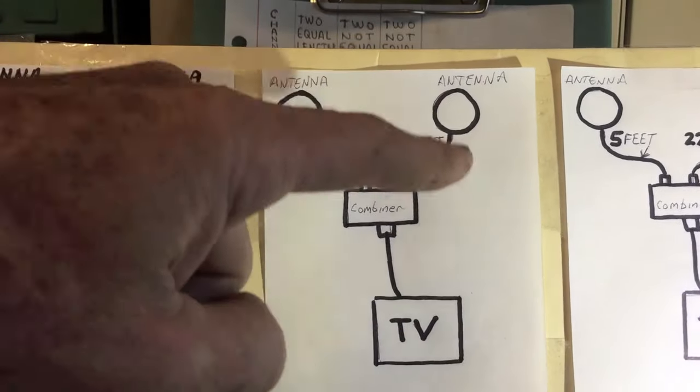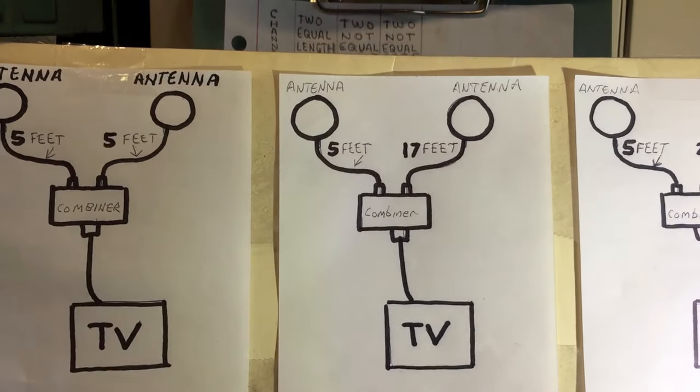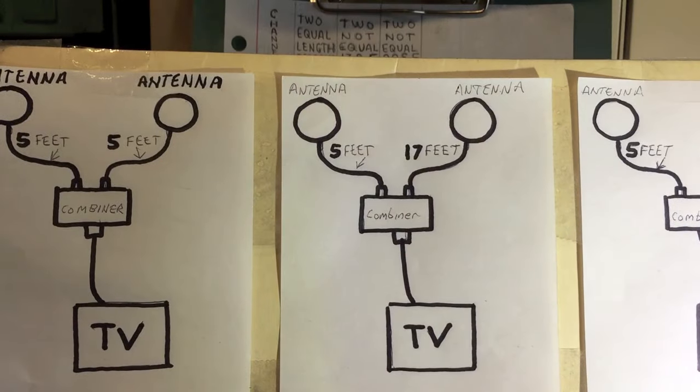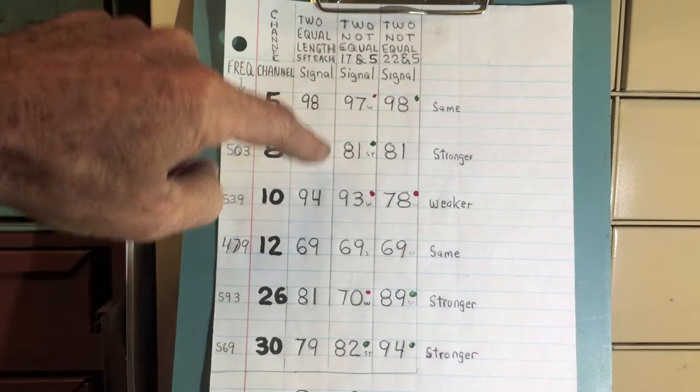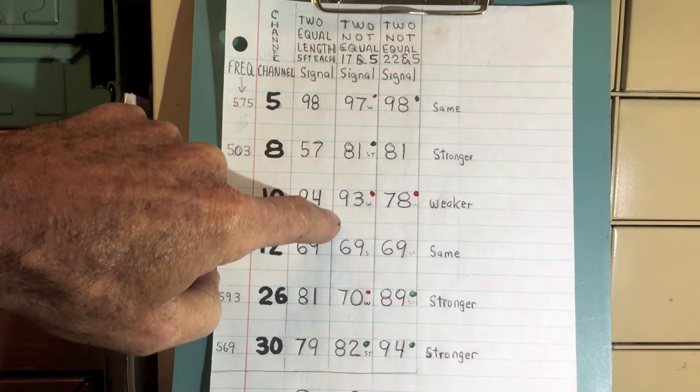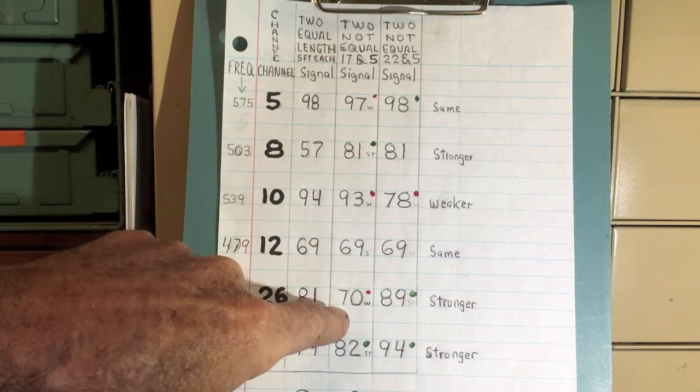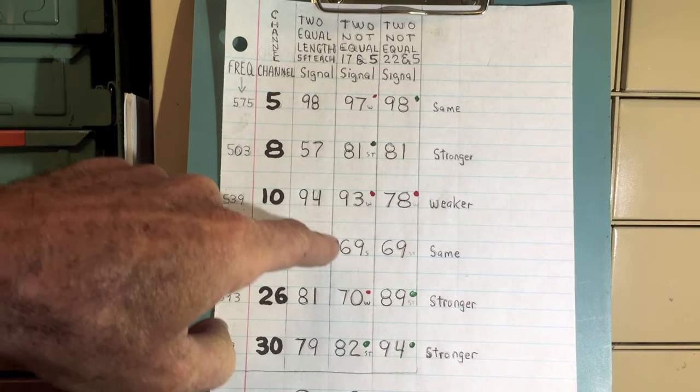In the second test, I added 17 feet of coax to one side to see if it affected the signal. As you can see, it certainly did. It weakened one or two channels and strengthened a couple.